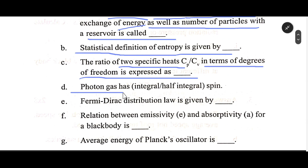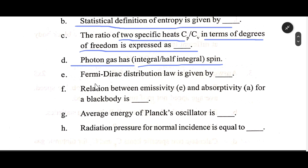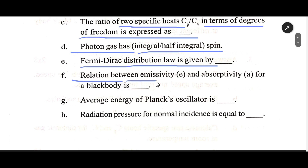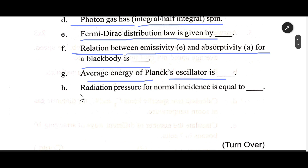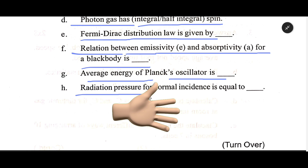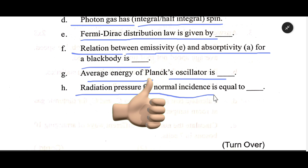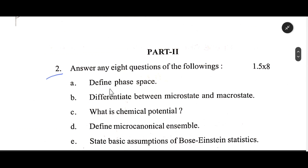Photon gas has ___ (integral / half-integral) spin. The Fermi-Dirac distribution law is given by ___. The relation between emissivity and absorptivity for a black body is ___. The average energy of Planck's oscillator is ___. Radiation pressure for normal incidence is equal to ___.